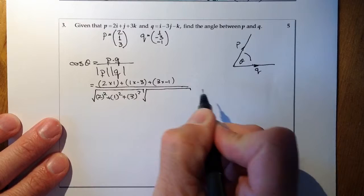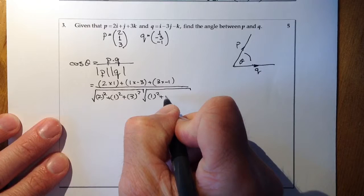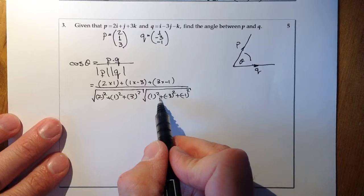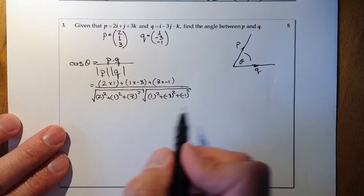I'll do the magnitude of Q. So I'll go for 1 squared, plus minus 3 squared, plus minus 1 squared. Just be very careful with the negative signs here, and make sure that you're squaring out the negative, and then you're adding them up.